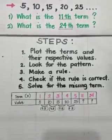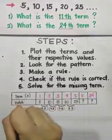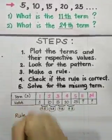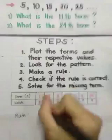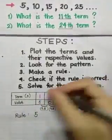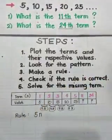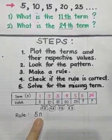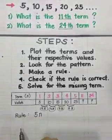From there, we can now make the rule. So what would be our rule? Since there is an increase of 5, we will put 5 multiplied by N, or 5N.